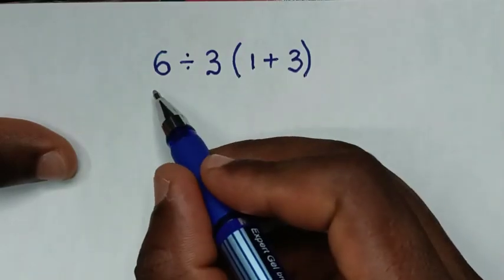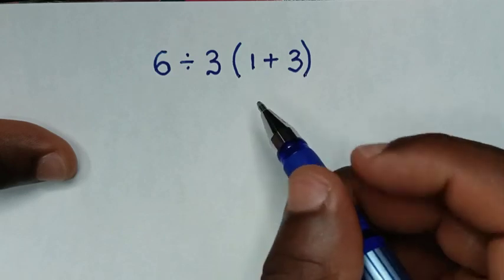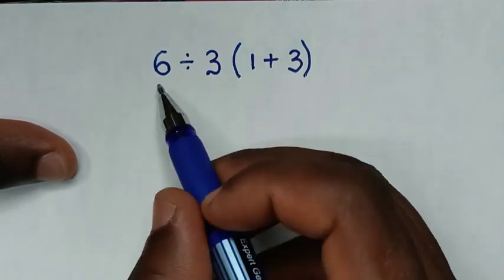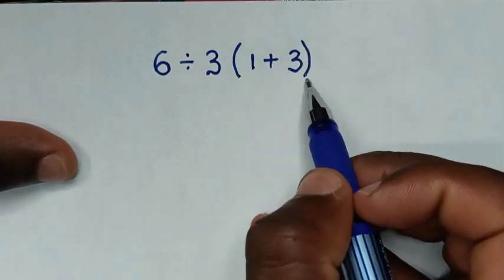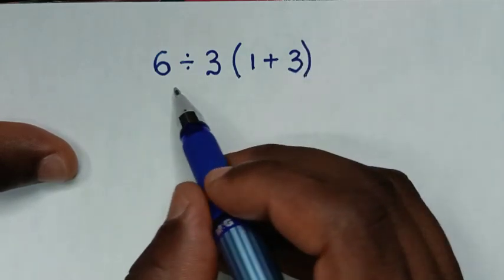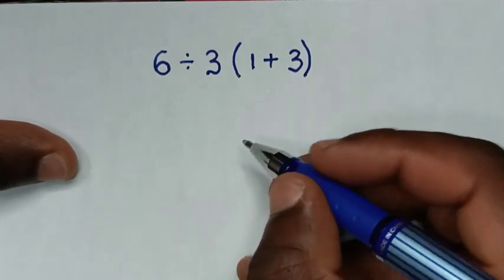Hello, you are welcome to solve this math problem which are orders of operations, whereas the problem is 6 divided by 3 bracket 1 plus 3 bracket. So from this problem let's solve it by using BODMAS rule.